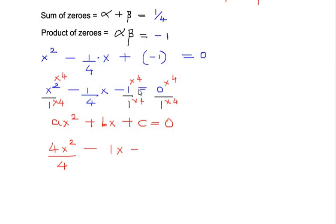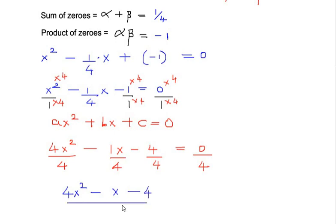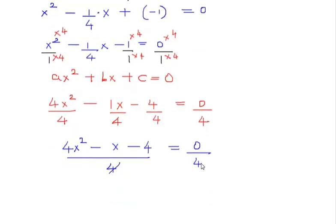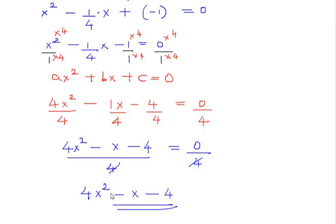Multiplying through, we get 4x² over 4, minus 1x, minus 4 over 4, all equal to 0 over 4. Since all denominators are the same we can cancel them, giving us 4x² - x - 4. This is the quadratic polynomial in the standard form ax² + bx + c.